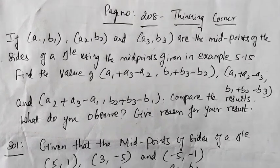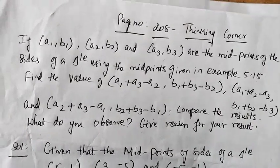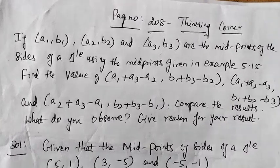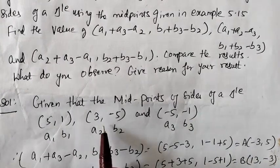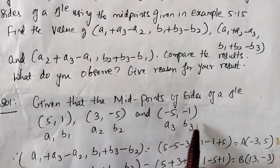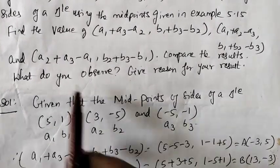The 5.15 points are (5,1), (3,-5) and (-5,-1). This is a1,b1, a2,b2, a3,b3 - the midpoints of the triangle.